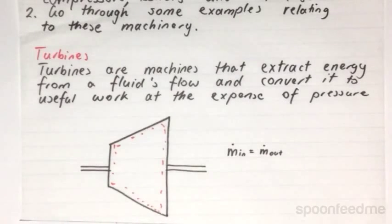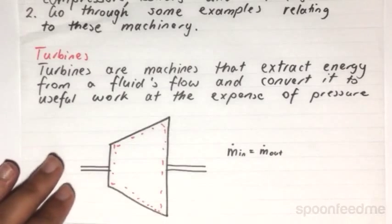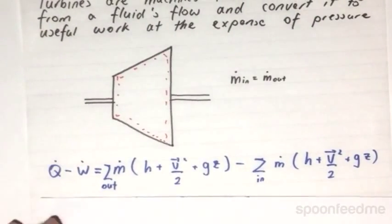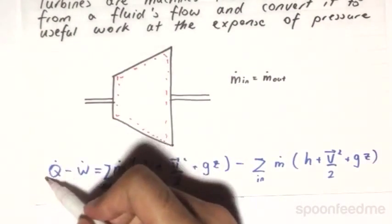So how do we analyze our turbine with respect to our first law of thermodynamics for open systems? Well, an ideal turbine is one where the energy loss to heat is negligible, so therefore Q dot is zero.